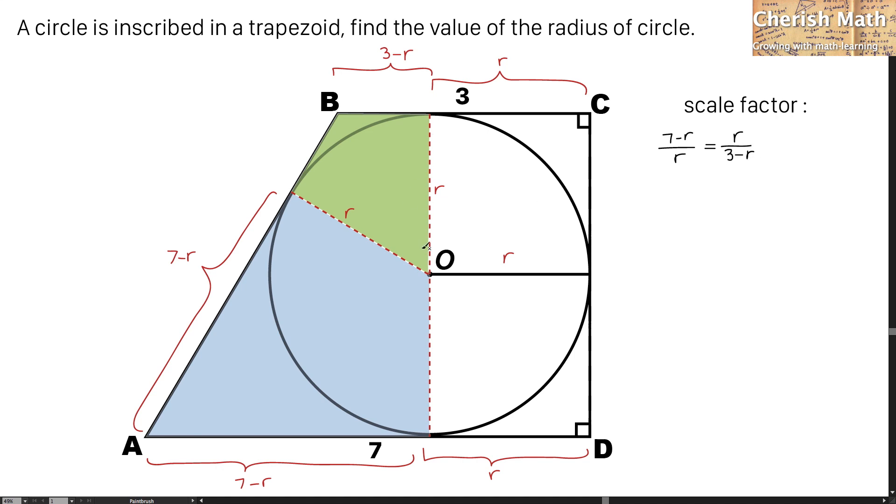I'm now going to solve the problem by cross-multiplying in this equation, and that turns R squared equal 21 minus 10R plus R squared.